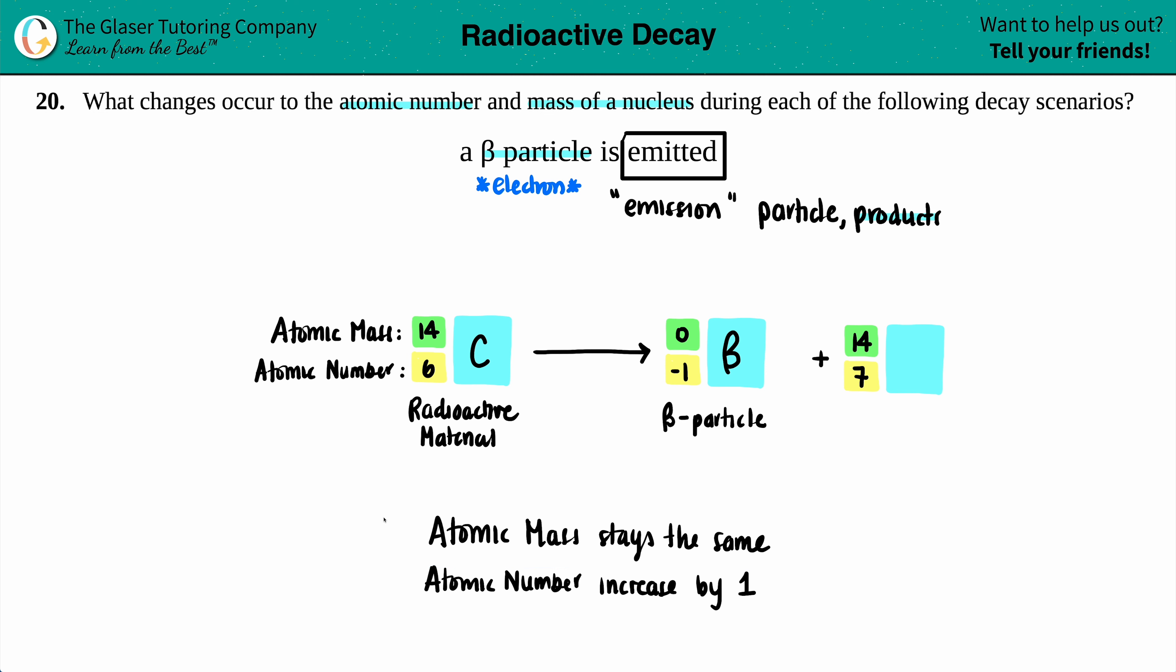So when you're undergoing beta particle emission, the atomic mass will stay the same, because electrons have nothing to do with the nucleus. But you just add a number. So if you want to find out who this is, you always look at your atomic number to find out who it is. And on the periodic table, number seven is big bad nitrogen. But this is the answer. So hopefully that helps.